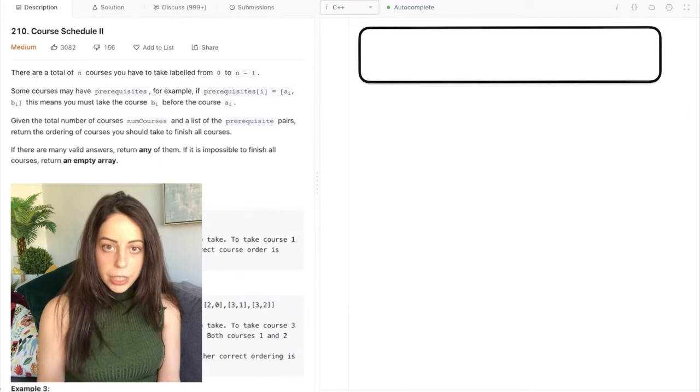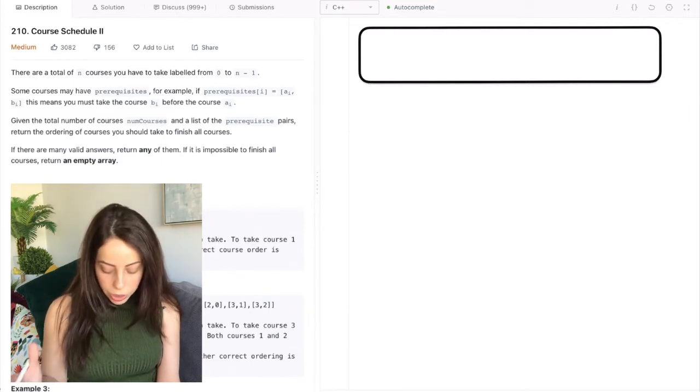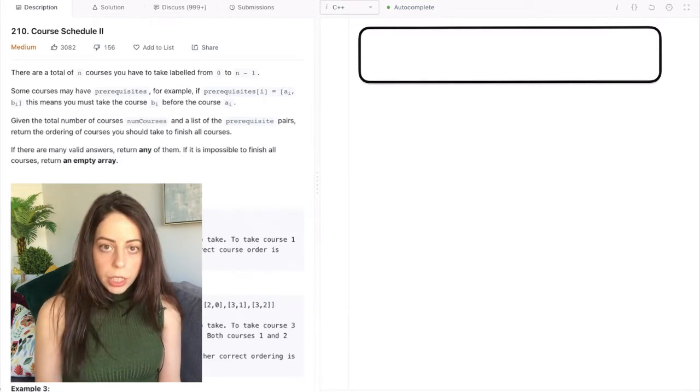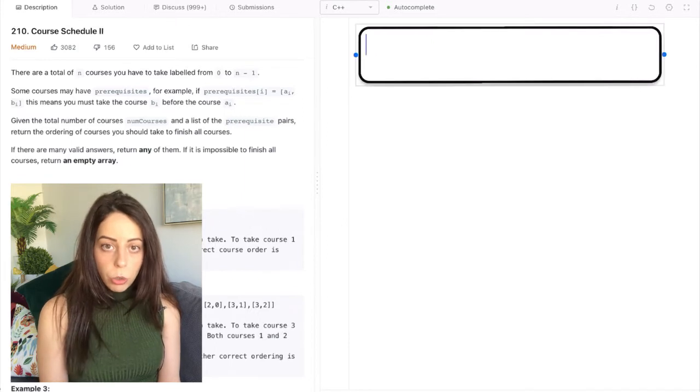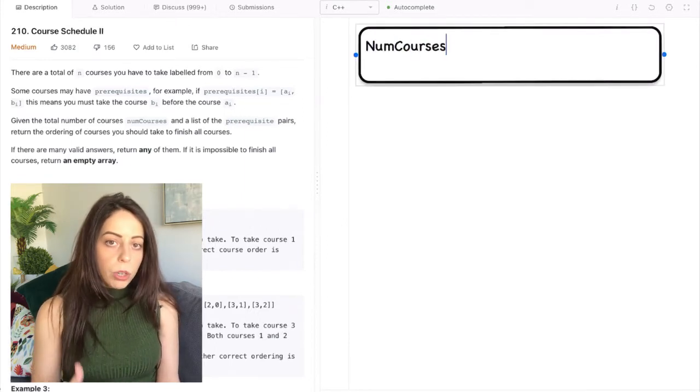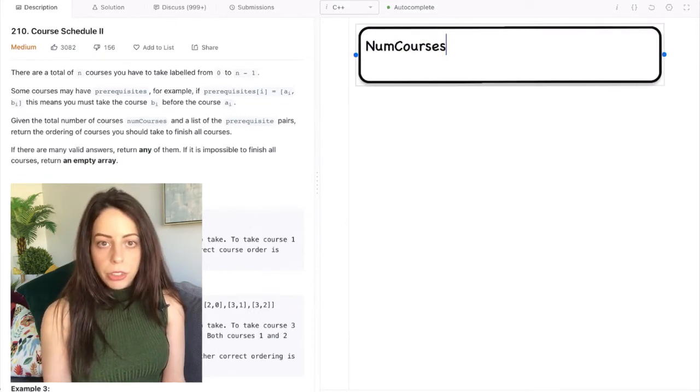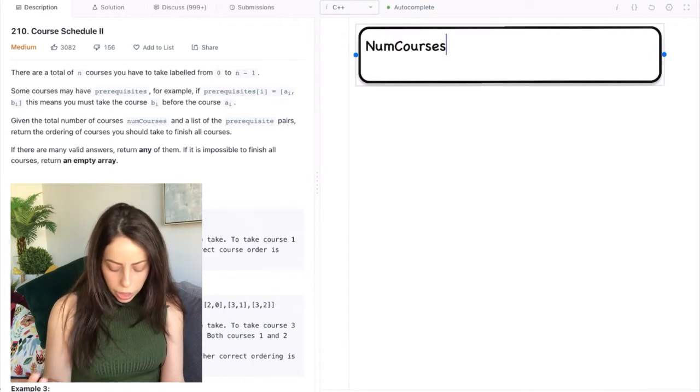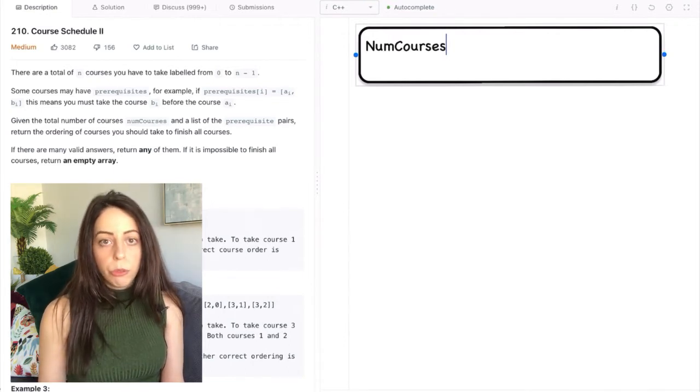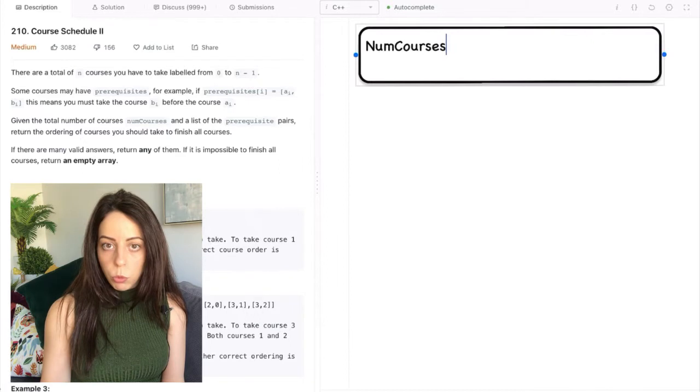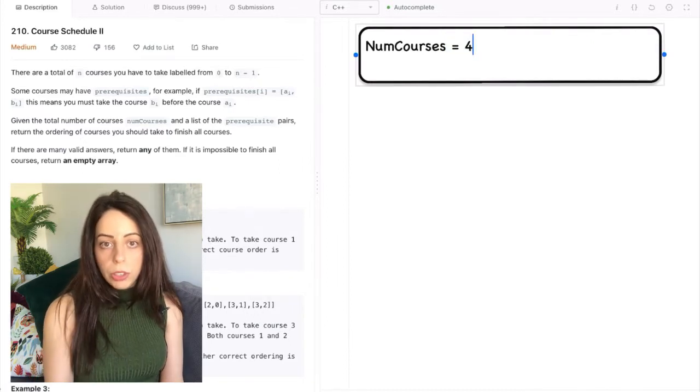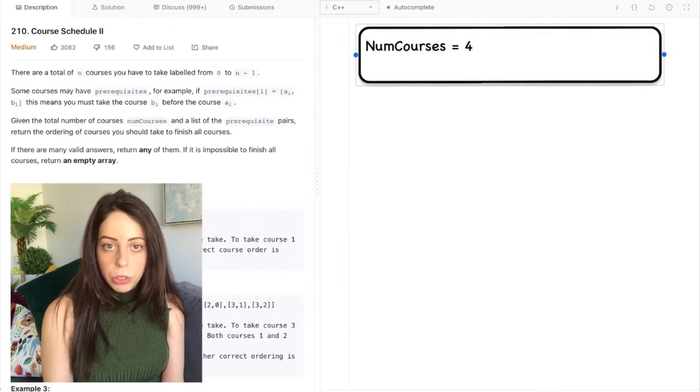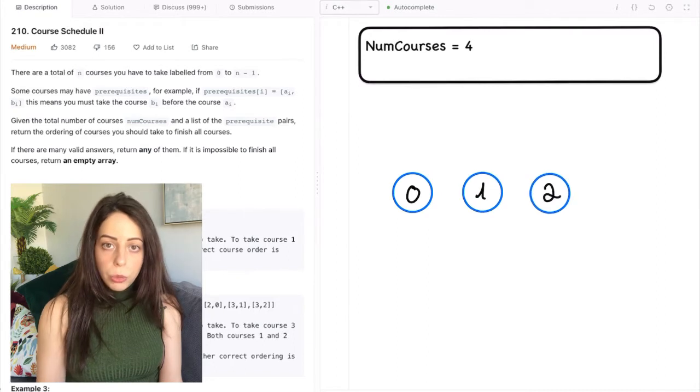Now how is this problem defined as a coding question? It goes like this. You get two inputs. The first input is an integer called numcourses and represents the number of courses that you need to take. The courses are labeled from zero to number of courses minus one. So if you need to take four courses, the names of those courses will be zero, one, two and three.